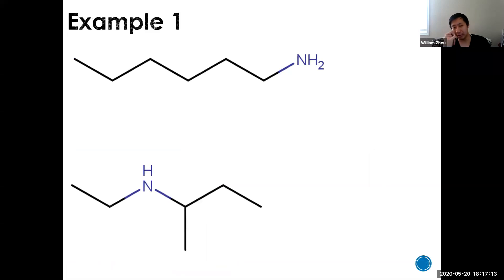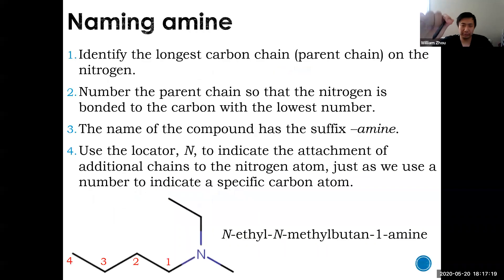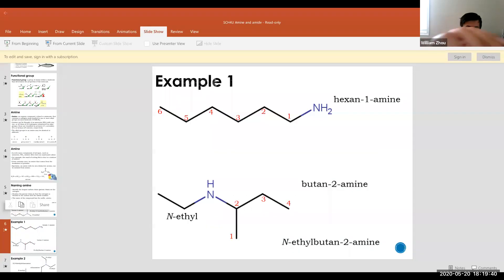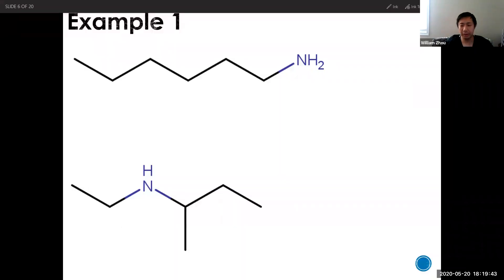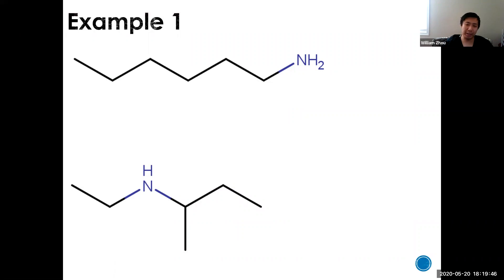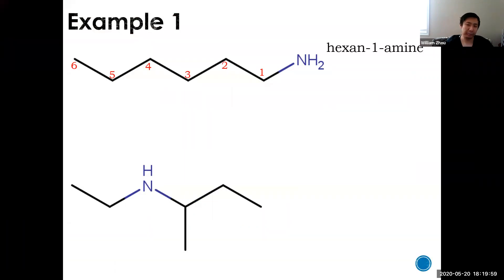For the first practice example, count the carbon chain: one, two, three, four, five, six - a total of six carbons on that nitrogen, and the nitrogen doesn't have any other carbon chain. So the name is hexan-1-amine: hexane for the six carbons, one because the amine is on carbon one.